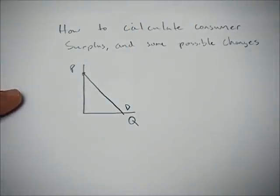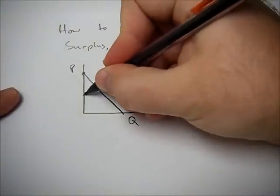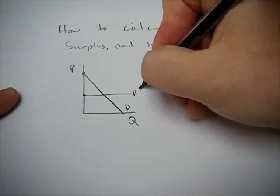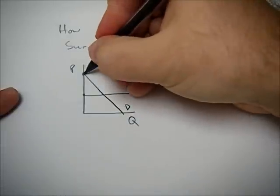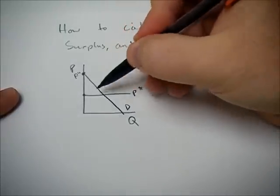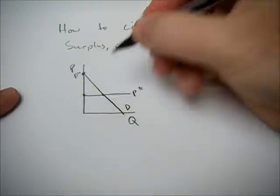So in order to calculate consumer surplus, we need this demand curve and we need some price level. We'll call it P star and then we need to know what this P upper limit is too because we need these numbers in order to calculate consumer surplus.